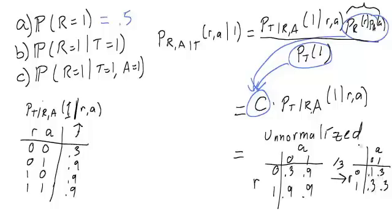Okay, so this table gives us the distribution of R and A given T. In part B, we're asking for the probability that R is 1 given that T is 1. So in this case, we don't care about A.